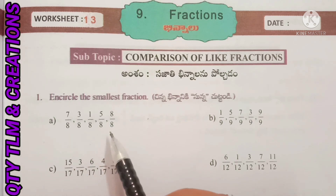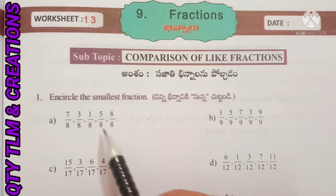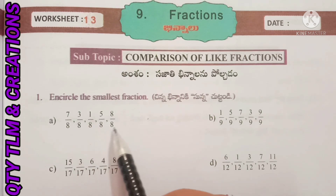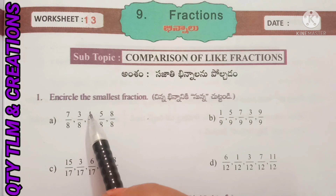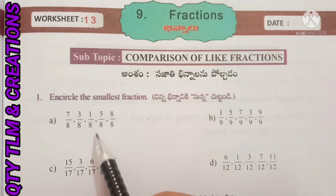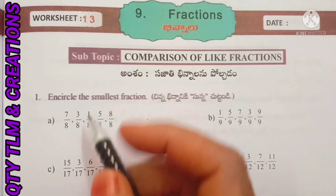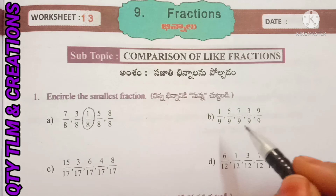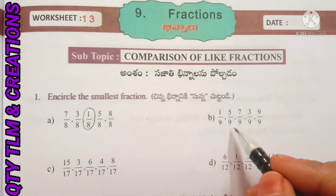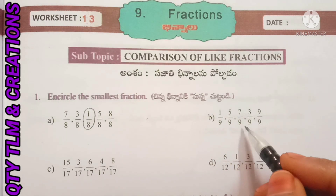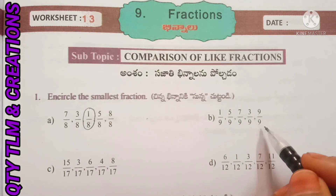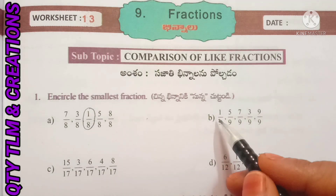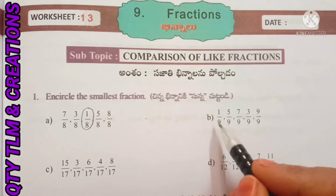Which fraction has the smallest numerator is smallest among other fractions? So 1 by 8 is the smallest fraction. B: 1 by 9, 5 by 9, 7 by 9, 3 by 9, 9 by 9. Here also, 1 by 9 is the smallest fraction.